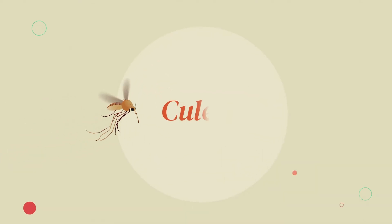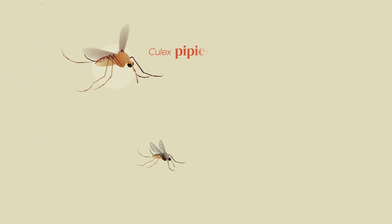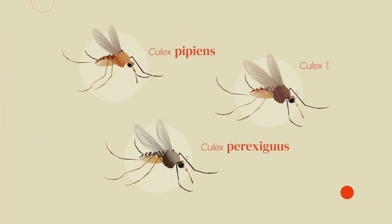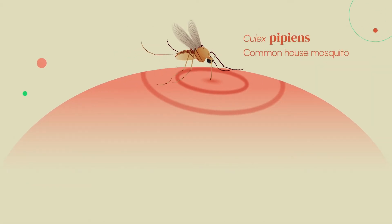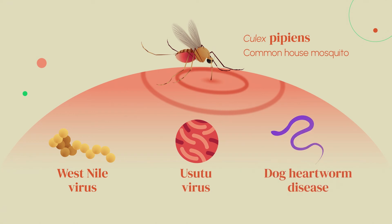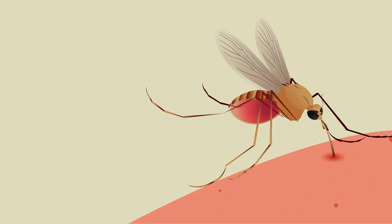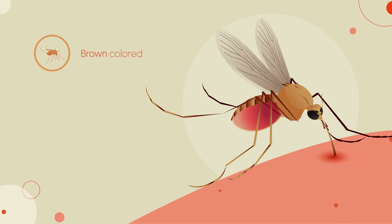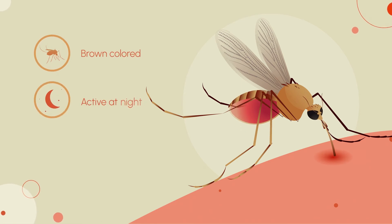Culex. Culex mosquitoes are the most widespread species across the world. Culex pipiens, the common house mosquito, is the vector of the West Nile and Usutu virus, and of the dog heartworm disease. Mosquitoes of the genus Culex are brownish coloured and usually bite people at night, inside and near houses.